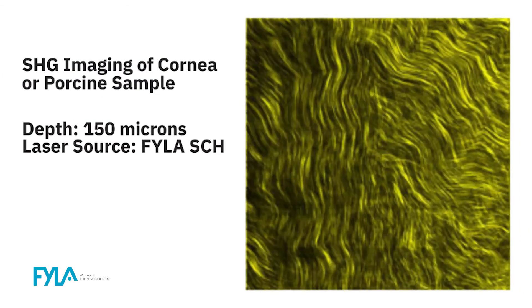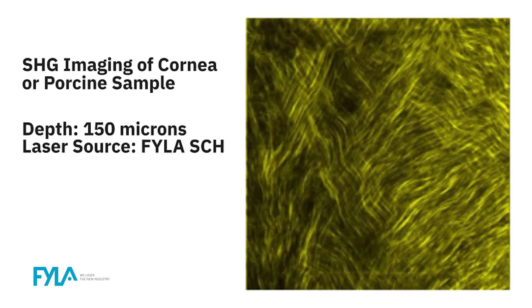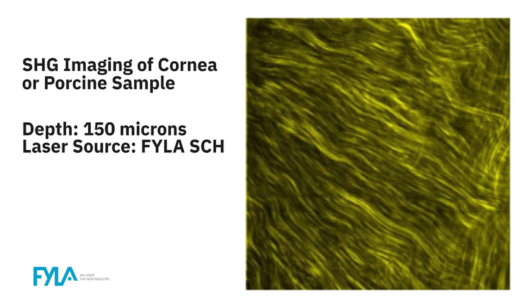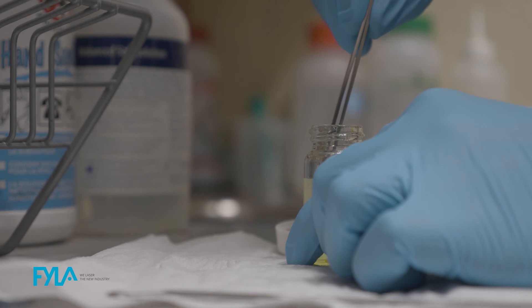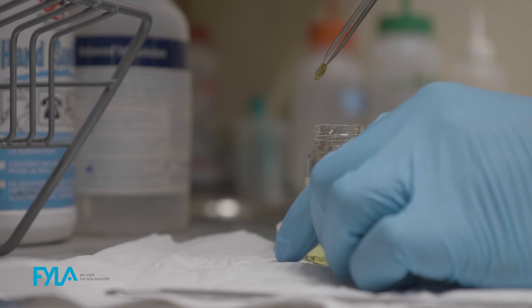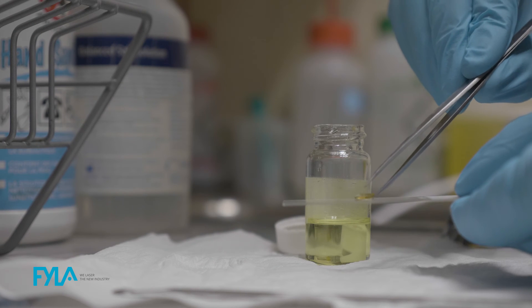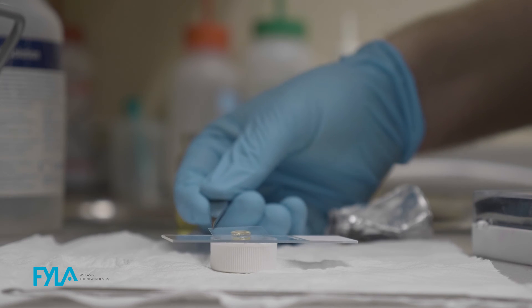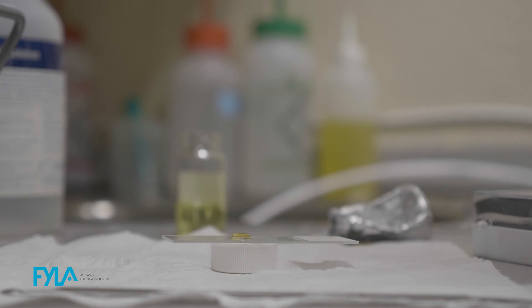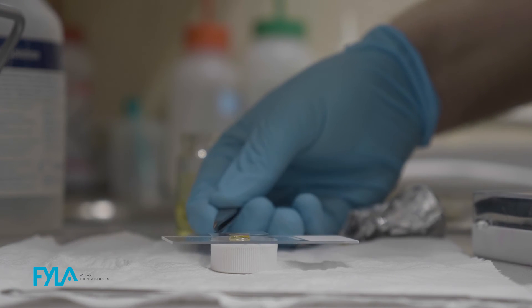With porcine eyes and porcine samples, which can range normally from 800 microns before you excise the tissue — and after excising, the tissue tends to swell a little bit so it can go even up to a millimeter — in that transparent tissue, I'm able to use the SCH to go all the way through the millimeter of tissue. I've also done experiments with sclera. With virgin sclera, I'm able to image down to about 150 microns before I start to lose signal due to scattering of the tissue.